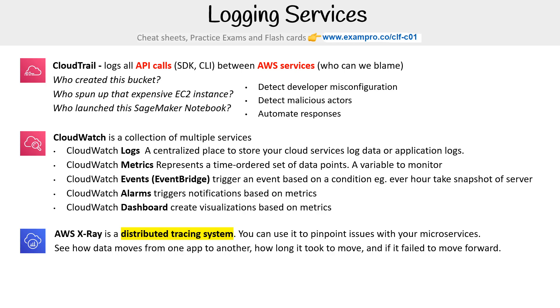Then we have AWS X-Ray, which is a distributed tracing system. You can use it to pinpoint issues within your microservices — seeing how data moves from one app to another, how long it took to move, and if it failed to move forward.